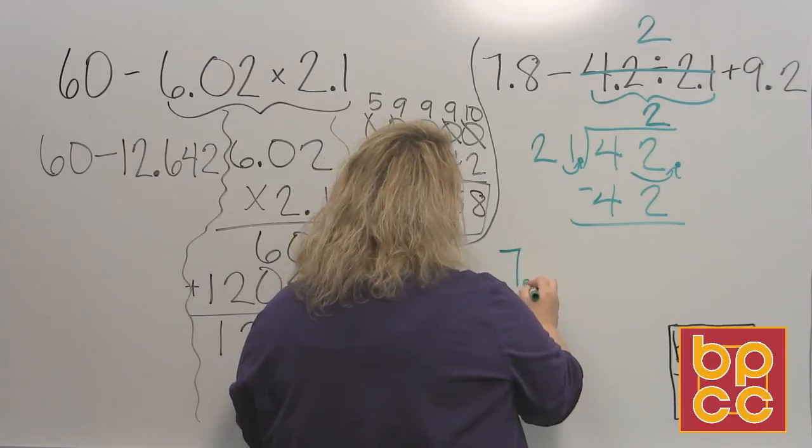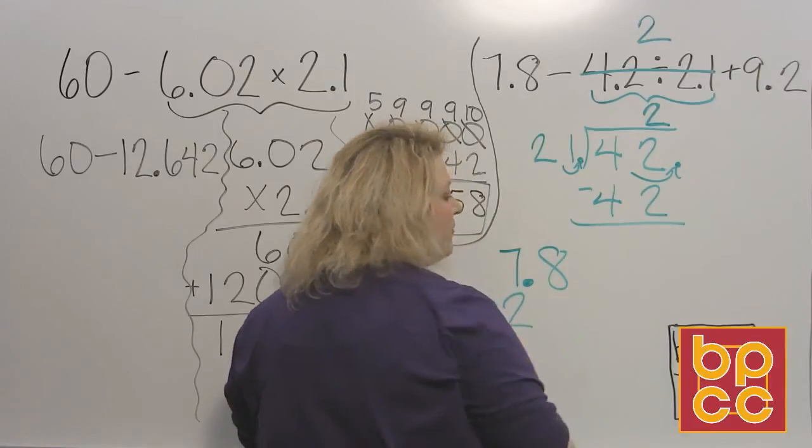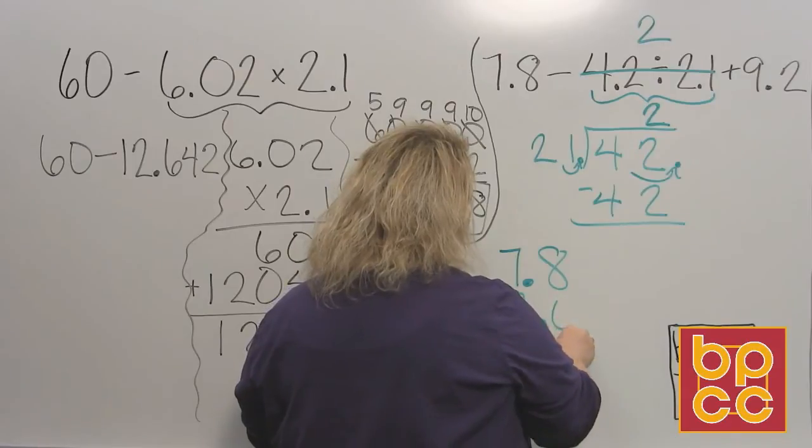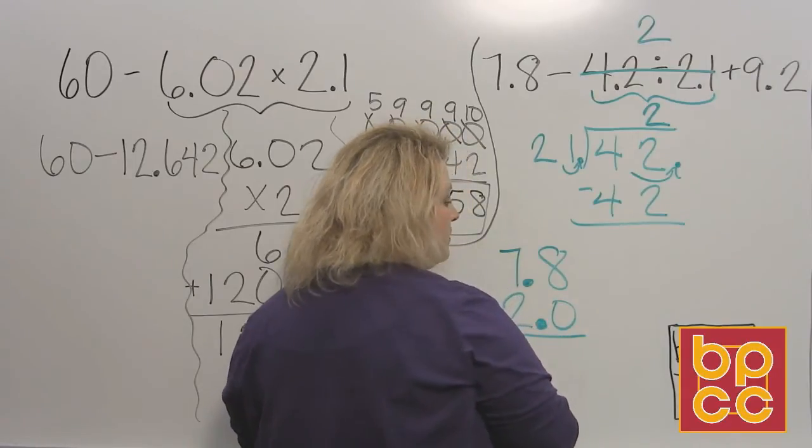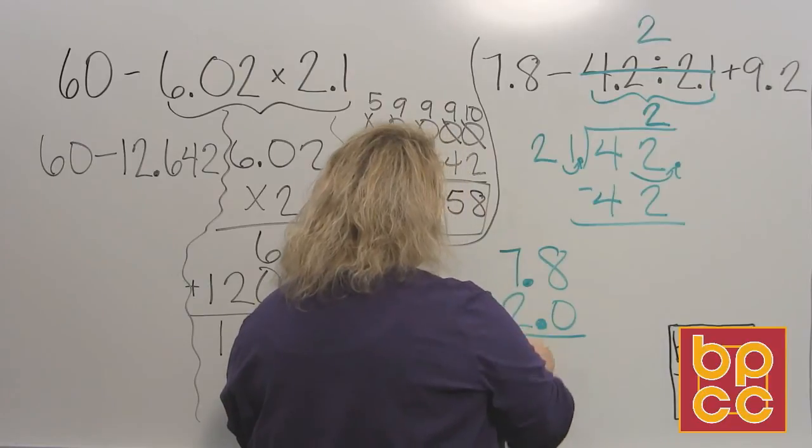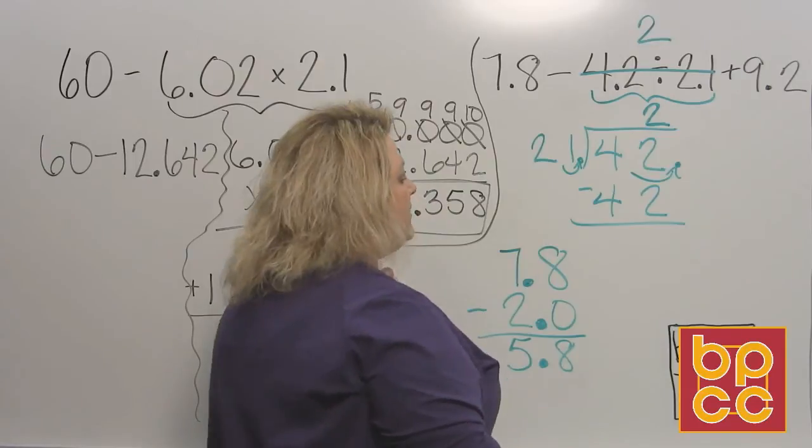I have 7 and 8 tenths, and I'm going to take away 2. Now remember that 2 is a whole number, so that's like saying 2 dollars, or 2 and 0 tenths. So when you do this, make sure your decimal lines up, and then you can just subtract. 5 and that's 8. So that's 5 and 8 tenths.